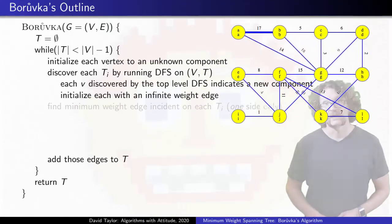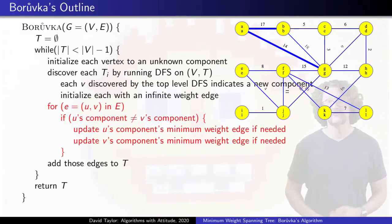To find those minimum weight edges leaving each tree, go through every edge. If its vertices are in different components, check each of them to see if this is a new minimum edge. It is possible for the edge to be the minimum out of neither, either, or both trees.